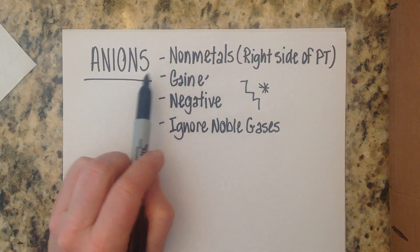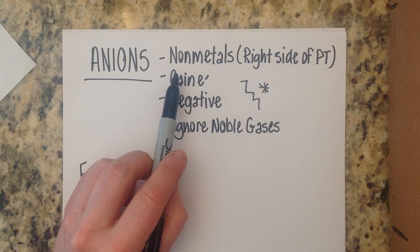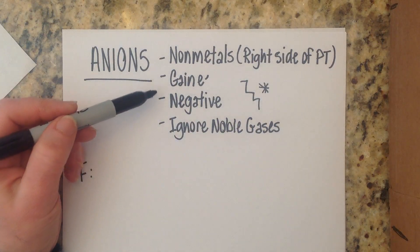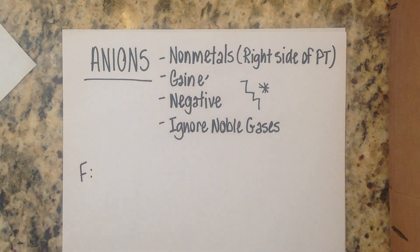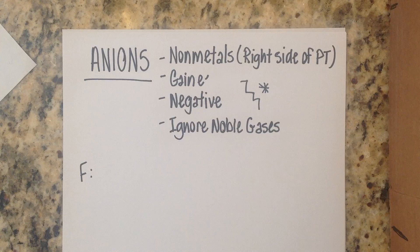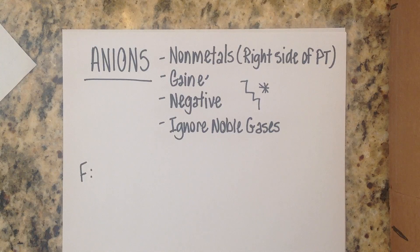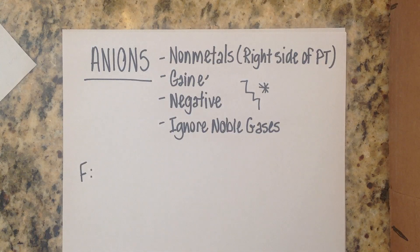So anions come from non-metals on the right side of the periodic table just drew you a little diagram there. They gain electrons they become negative we completely ignore the noble gases. So we're going to do the same thing we did on our cation lesson we're actually going to draw the neutral atom compared to its anions so we can point out some similarities and some things that are very different.